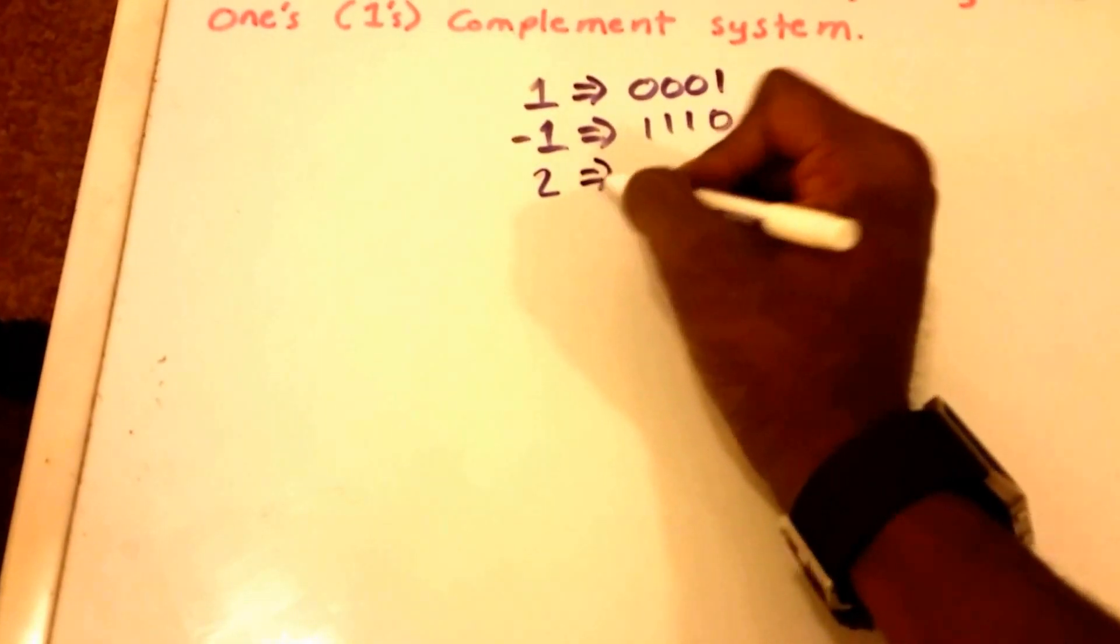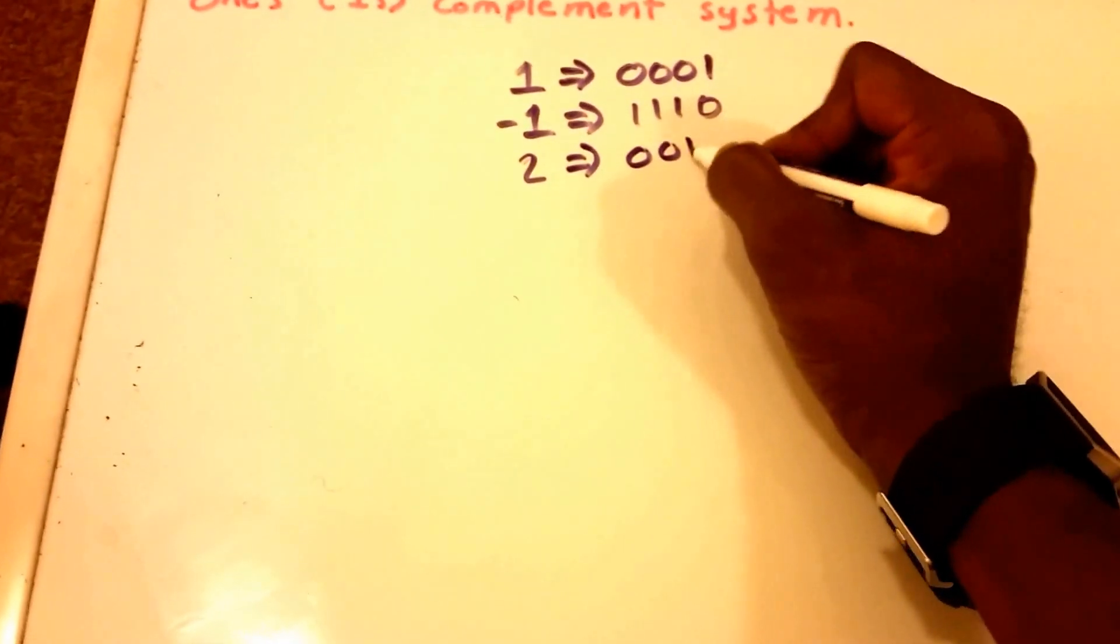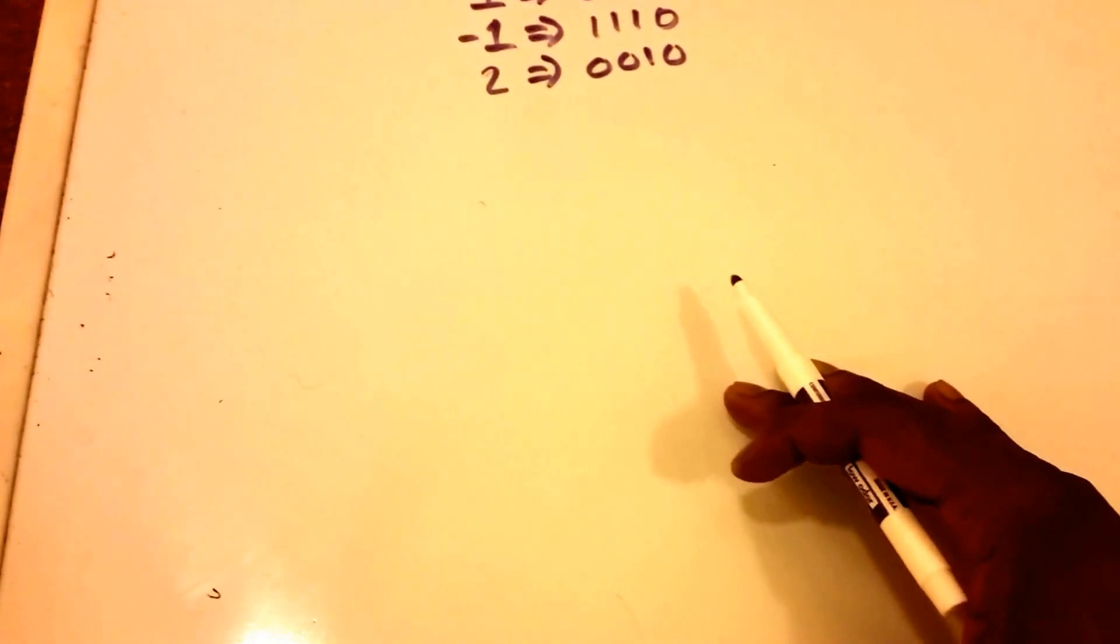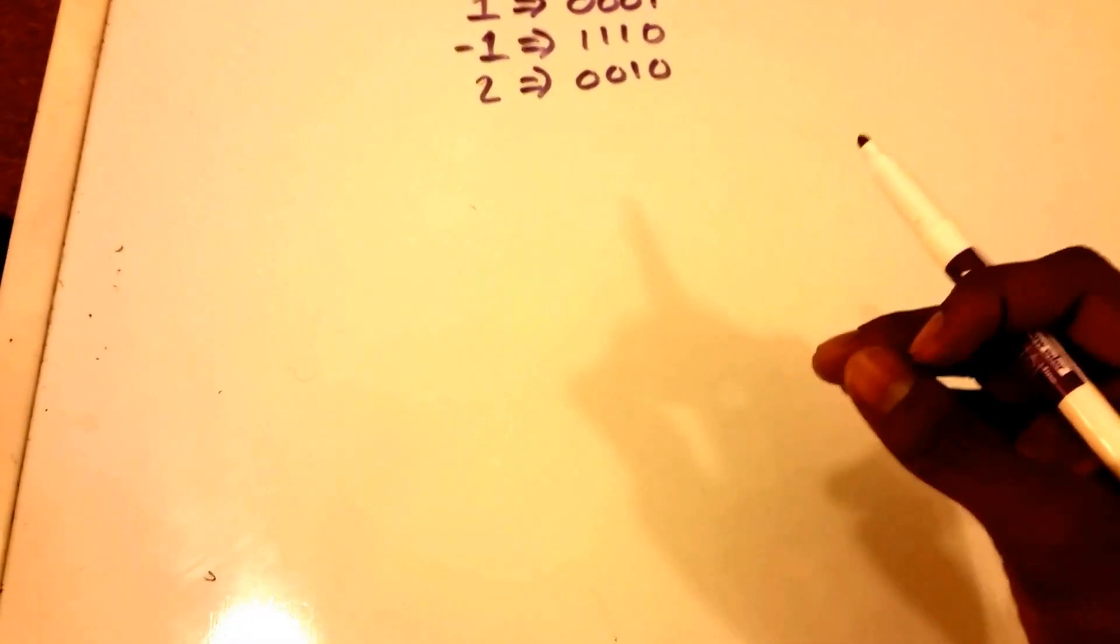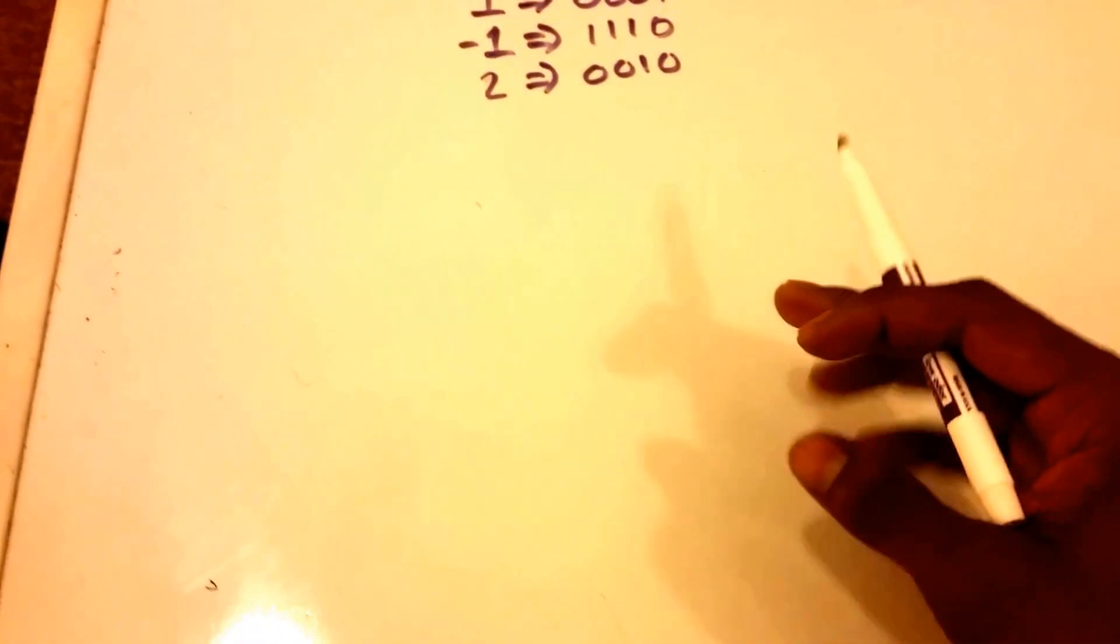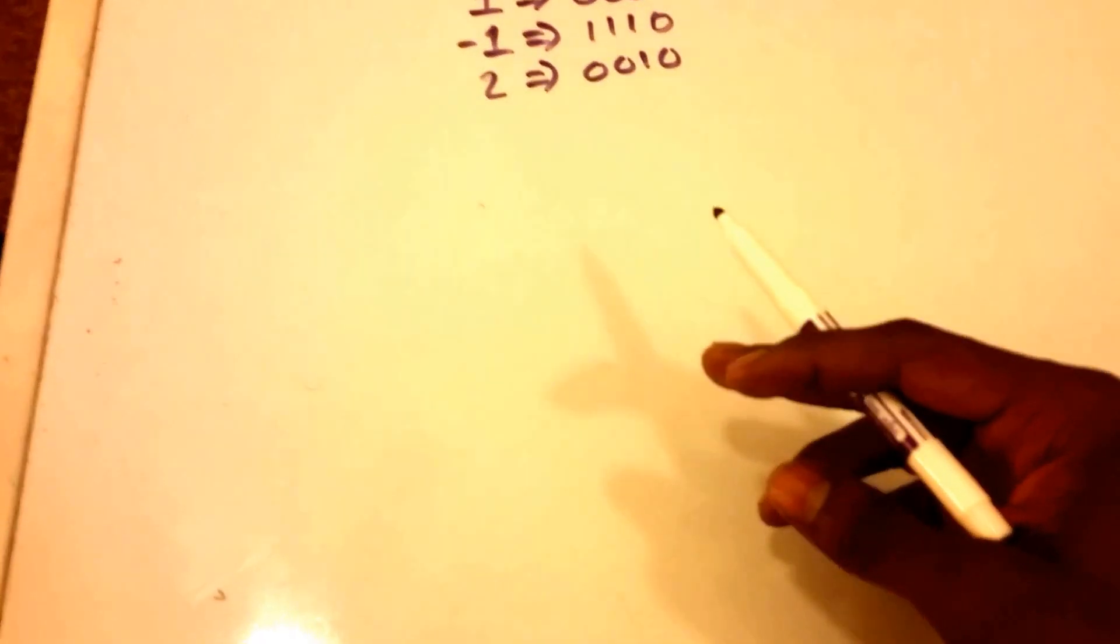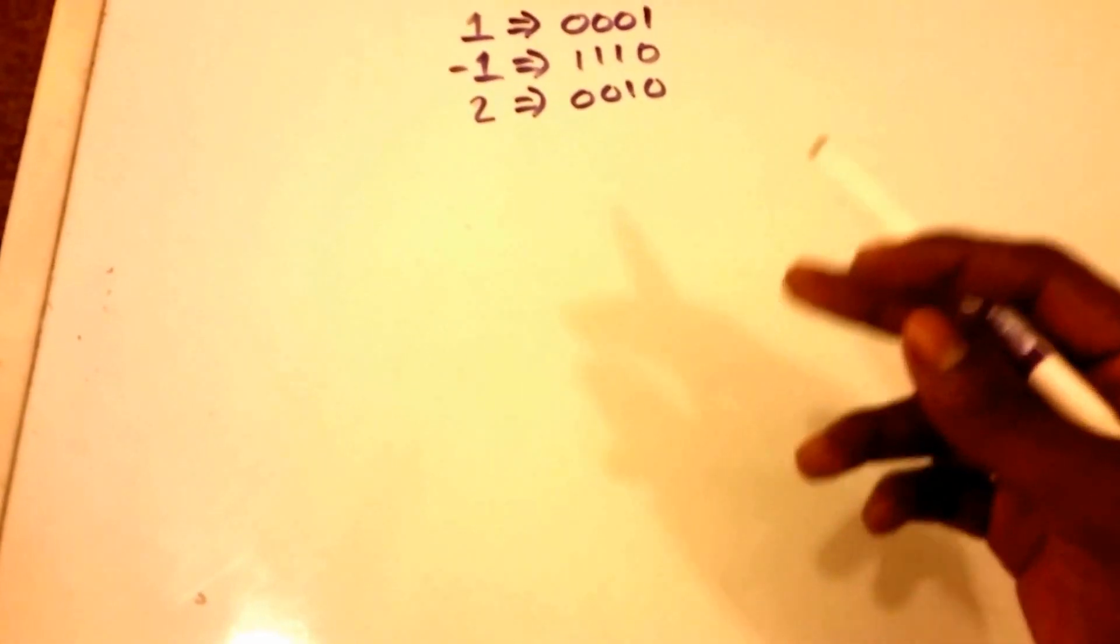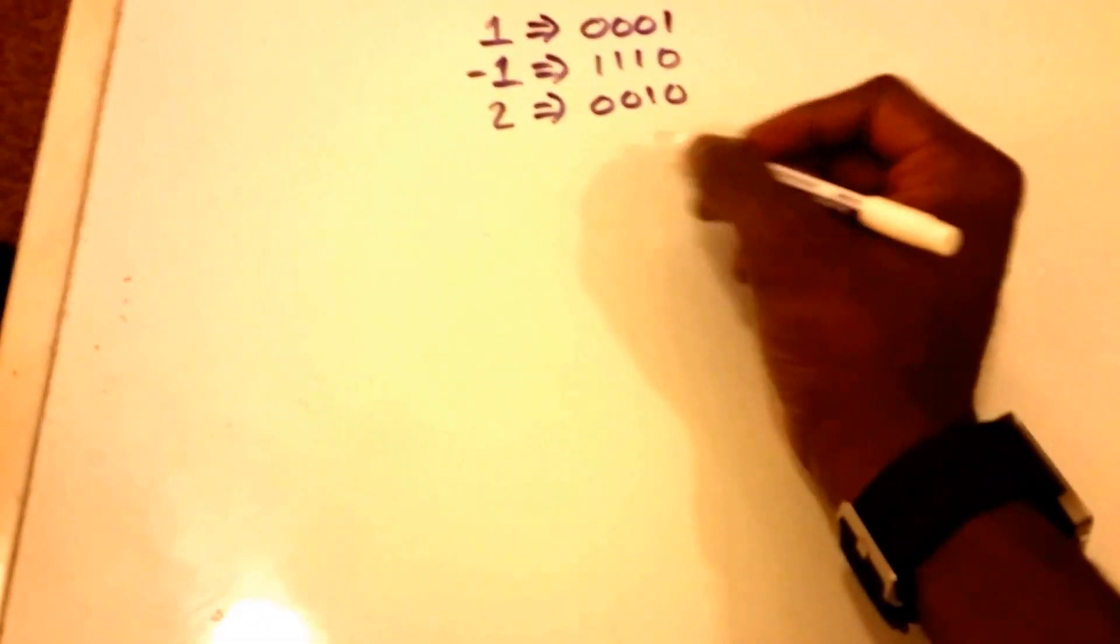So to add two numbers in the one's complement system we must do a conventional binary addition and then if necessary do an end-around carry, which means we add any resulting carry back into the resulting sum. I'll show you guys what I mean by this.